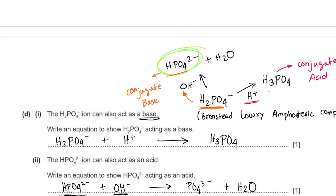The equations they asked for are all equations where these compounds act as Brønsted-Lowry acids and Brønsted-Lowry bases. Since HPO4 2- acts as an acid, it donates a hydrogen ion to the hydroxide ion, causing it to lose a hydrogen ion, become PO4 3-, and a water molecule forms. We can say that PO4 3- is its conjugate base.